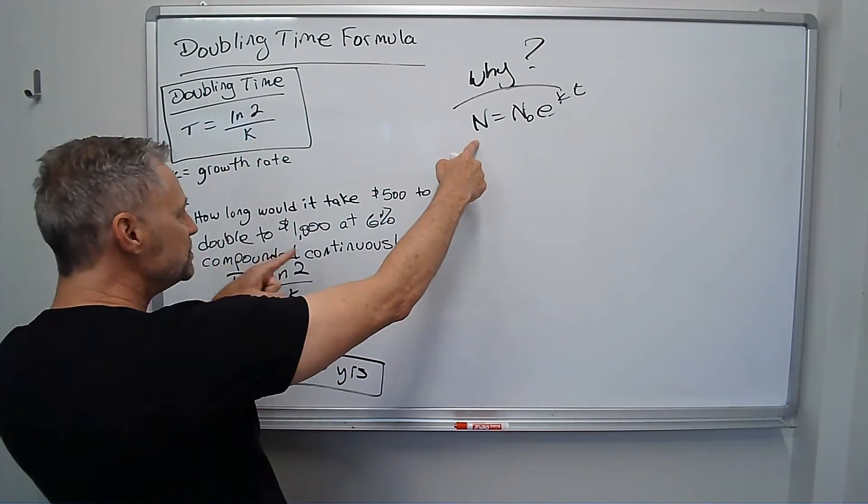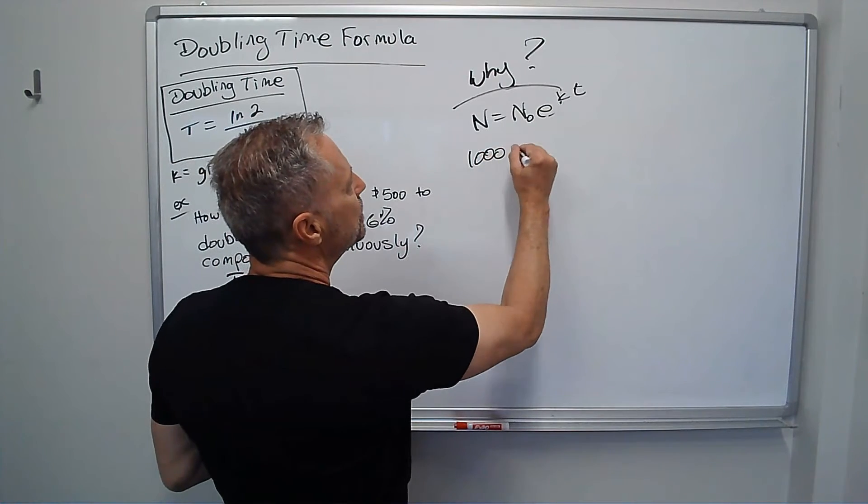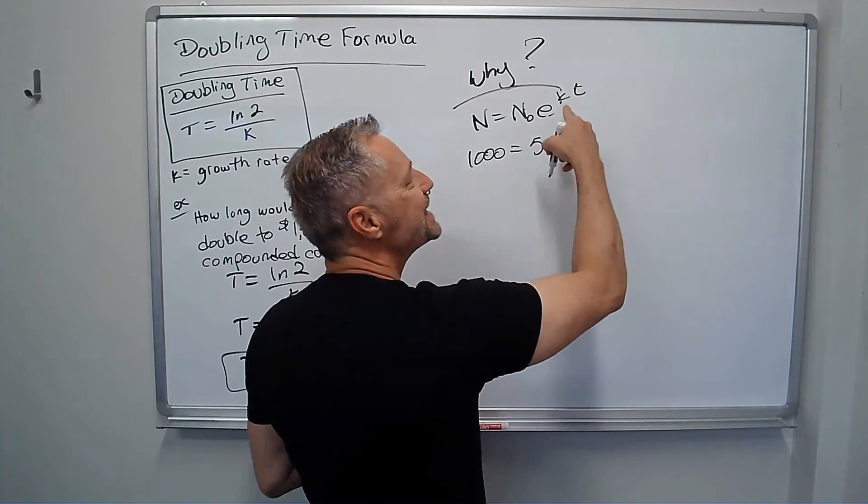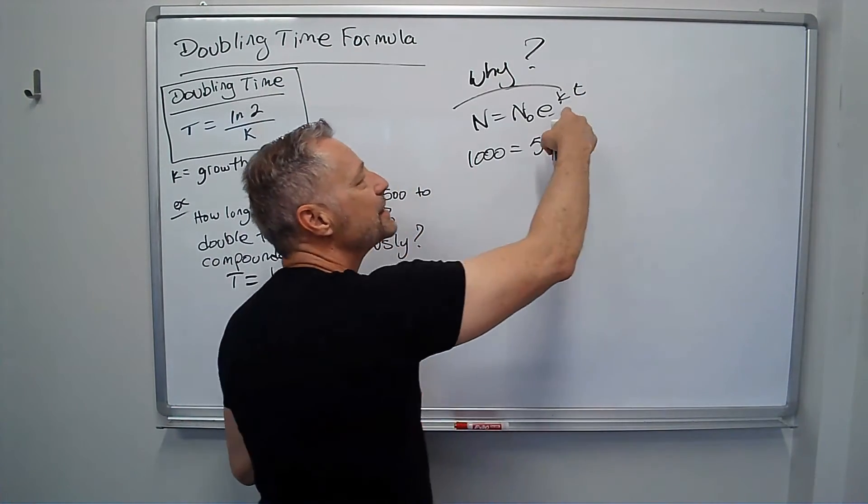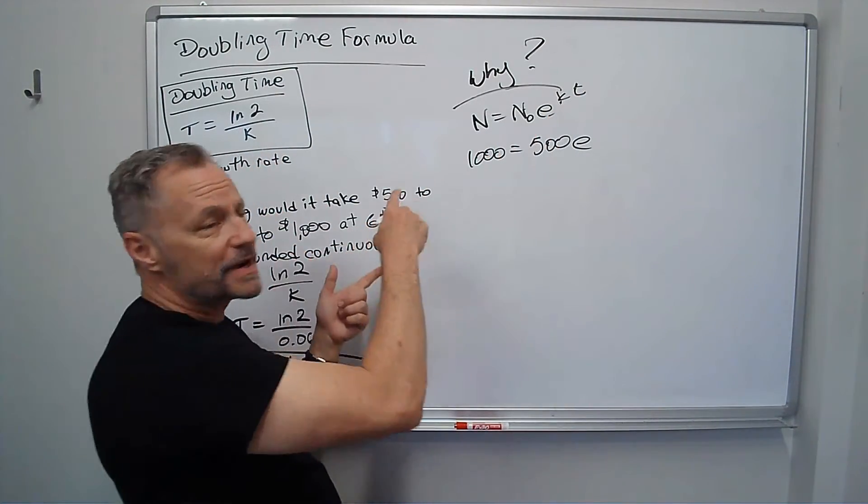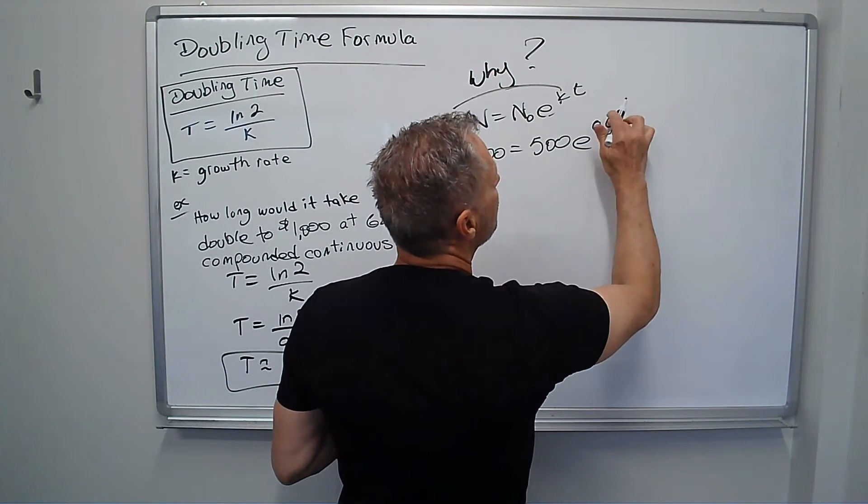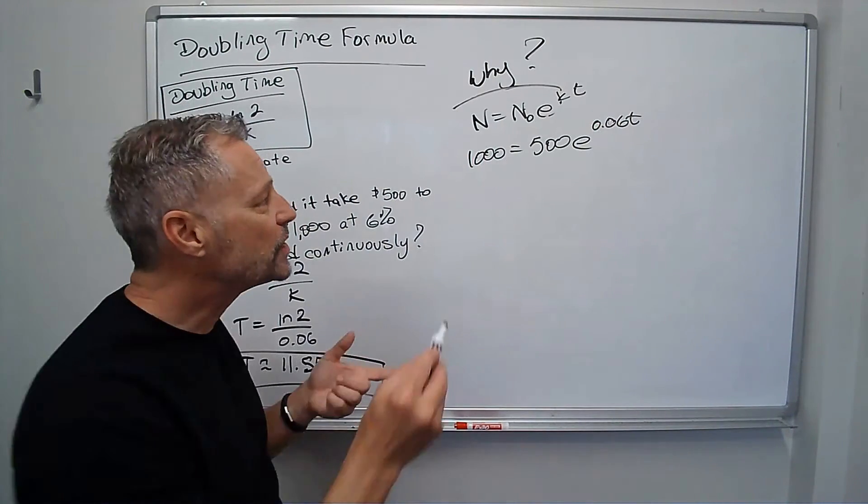Okay, so let's see. I'm ending with $1,000. I'm starting with $500, and I've got e to the kt. Well, k is my growth rate. That's 6%. But I don't know t. I'm trying to find t. So what do I do?